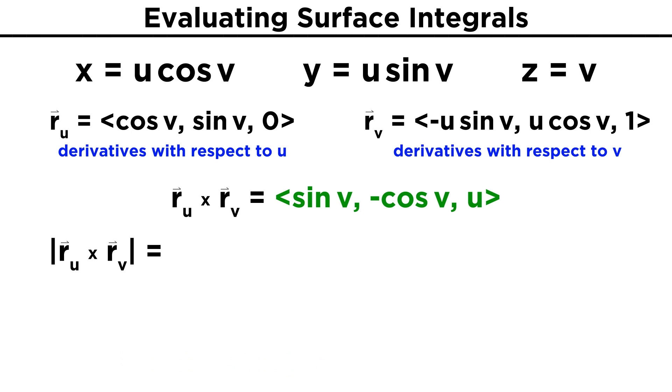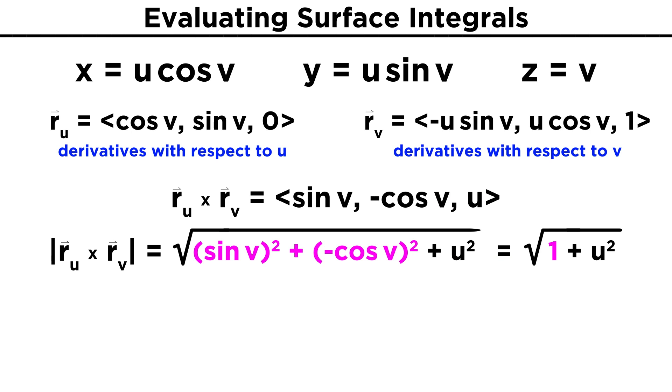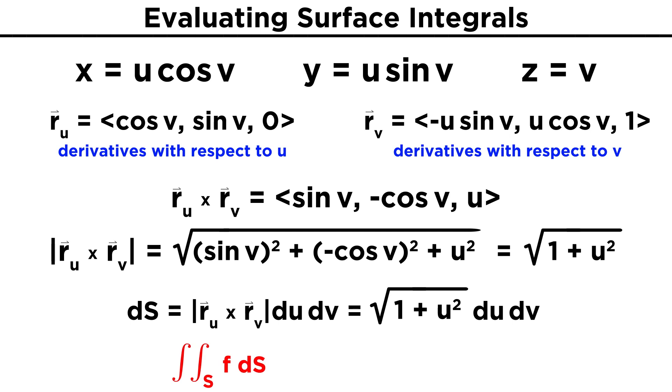Now we need the magnitude of this vector, which as we recall simply means the square root of the dot product with itself. This gives us root sine V squared plus negative cosine V squared plus U squared, which given the same identity we just used, becomes root one plus U squared. This is the magnitude of the cross product, making dS equal to root one plus U squared du dV. So our surface integral of some function F over this surface will be the double integral of F times root one plus U squared du dV, where F is written in terms of U and V, and the bounds will be determined by the range of U and V.